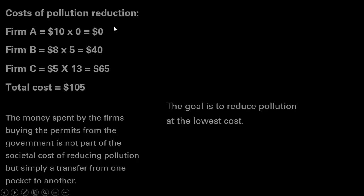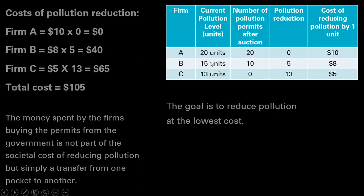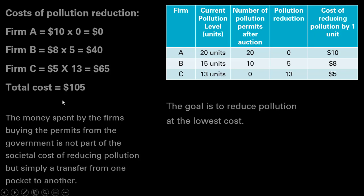In terms of the cost of pollution reduction, firm A doesn't have to reduce any pollution — it's holding 20 permits and currently producing 20 units. Firm B is sitting on 10 pollution permits and is currently polluting 15 units, so it has to reduce pollution by 5 units, costing firm B $40. Firm C doesn't have any pollution permits — it was outbid by the other two firms — so it has to reduce pollution by 13 units, costing $5 times 13, a total of $65. Adding these up, the total cost of reducing pollution is $105, which is lower than our first example.